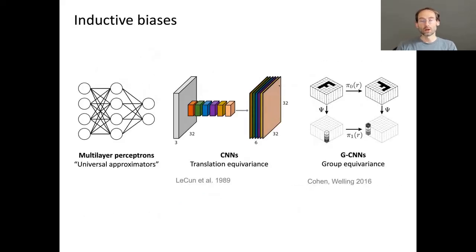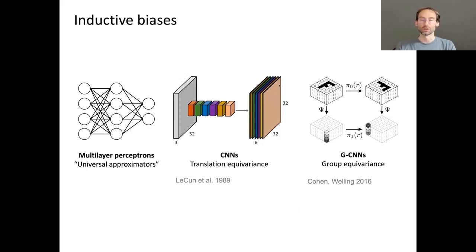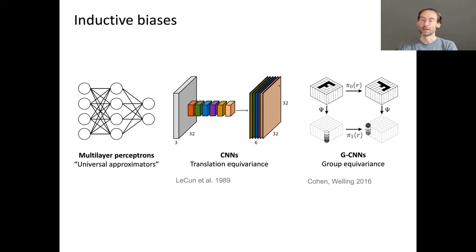From the standpoint of inductive biases, the success of neural networks in computer vision came from choosing the right inductive bias — abandoning general universal approximation architectures in favor of something with built-in invariance suitable for the problem. These ideas can be generalized: instead of shifts, we can generalize to groups. There were recent works from Taco Cohen and Max Welling that generalize CNNs to rotations and other group operations.